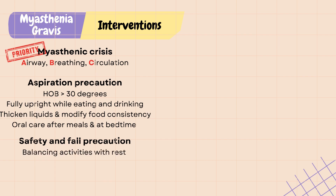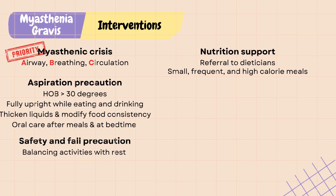Balance activities with rest, especially in the late afternoon or near end of day when symptoms are most prominent. Provide nutrition support due to difficulty chewing and swallowing, with referrals to dieticians and offering small, frequent, high-calorie meals. Perform eye care due to ptosis and difficulty closing the eyes. Administer artificial tears and tape eyes shut at night to prevent drying and irritation.